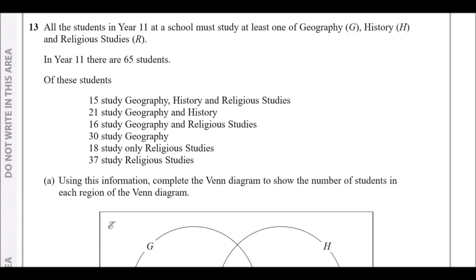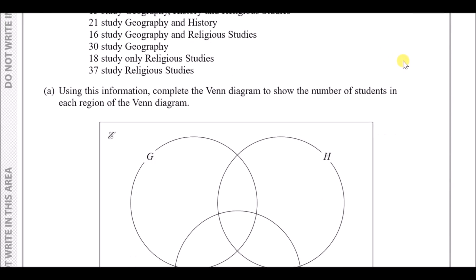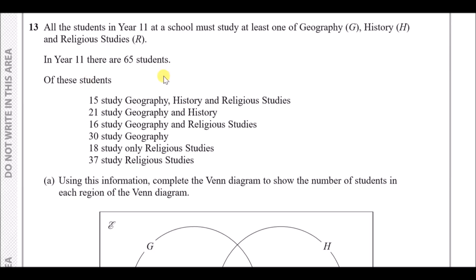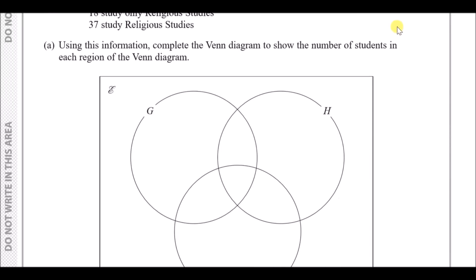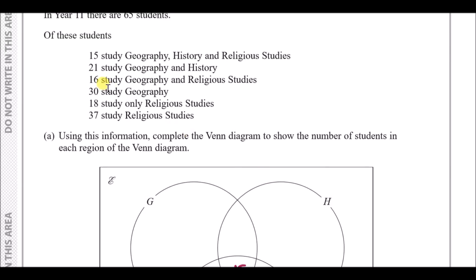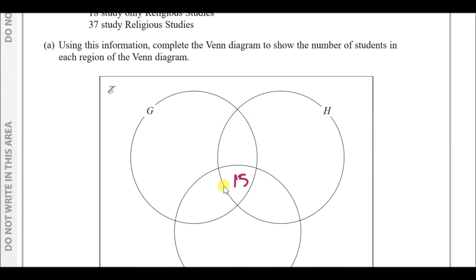Number 13. All students in Year 11 must study at least one of geography (G), history (H), and religious studies (R). There are 65 students in total. This is a triple Venn diagram problem. 15 studied geography, history, and religious studies, so 15 goes in the centre intersection of all three.